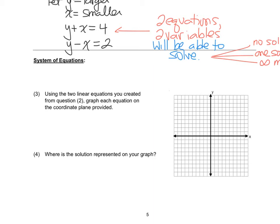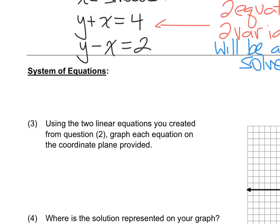All right. So, using the two linear equations to graph each equation on the coordinate plane provided, and then we want to find the solution. All right. So, let's take a look-see. I have one equation, y plus x equals four. We can actually graph that if we wanted to, but the better way to come up with a graph of that would be to get y alone and put our answer in slope intercept form.